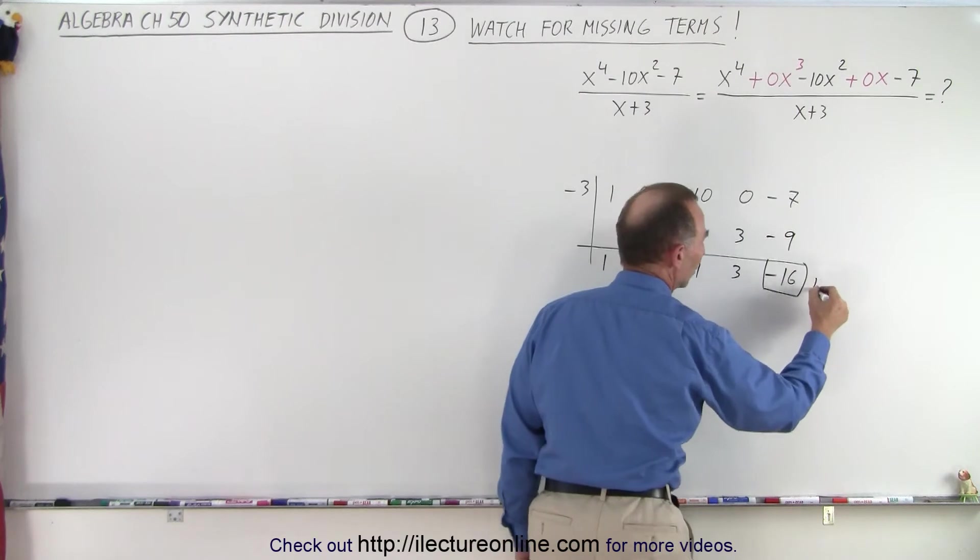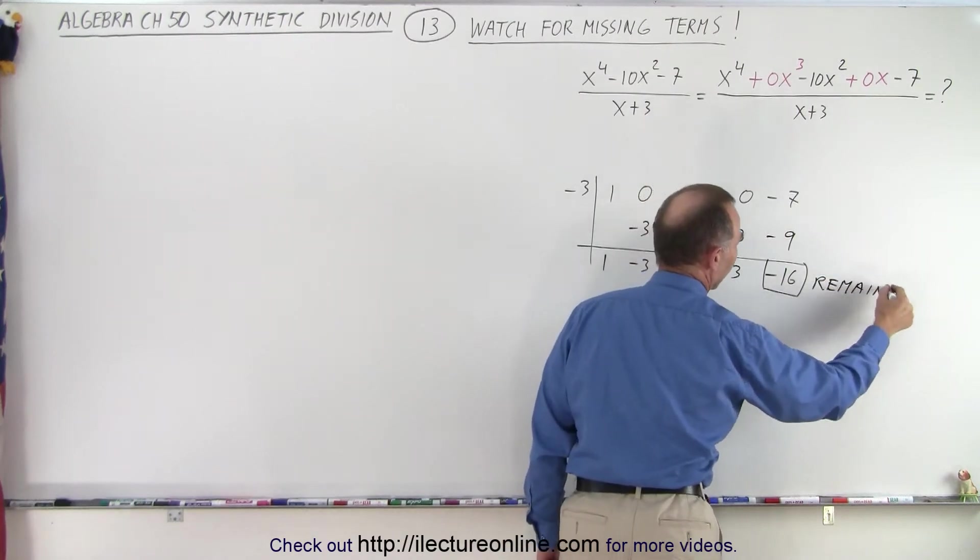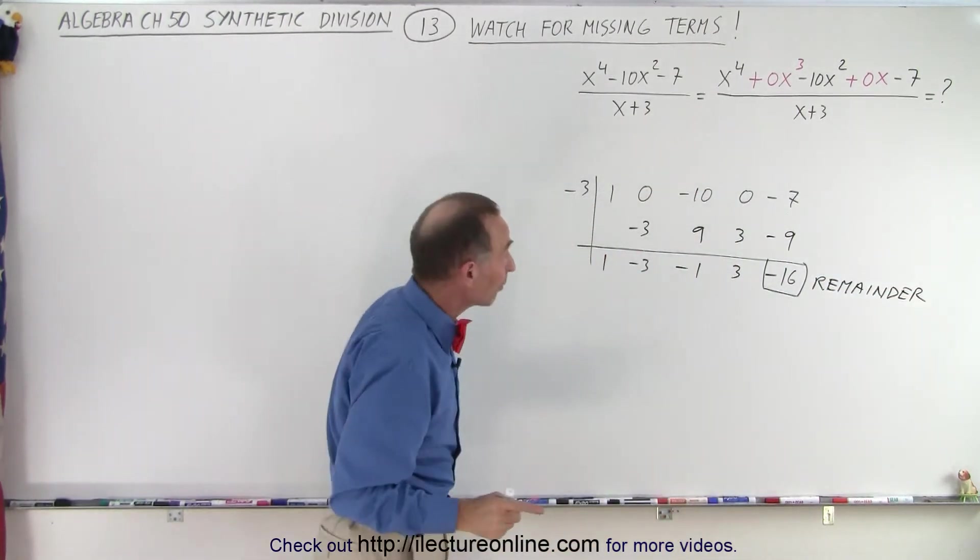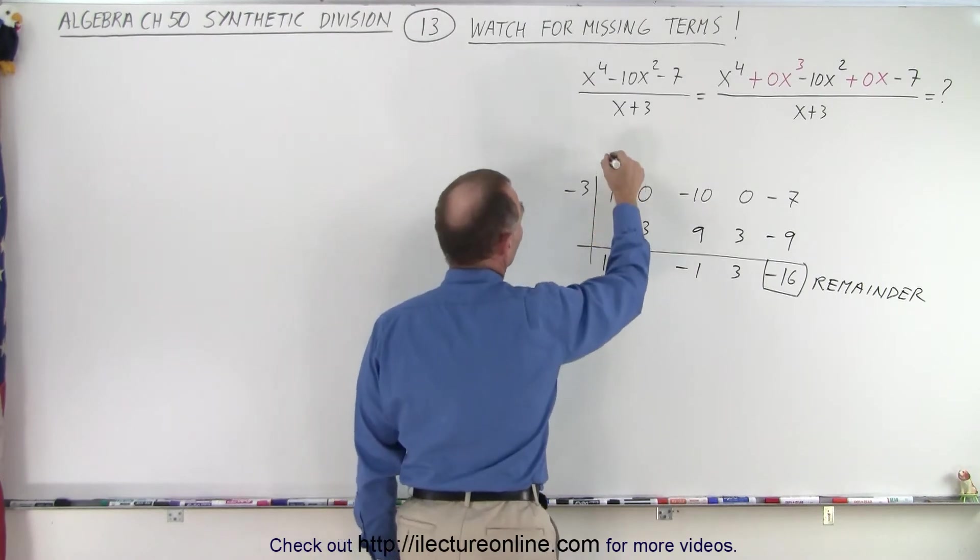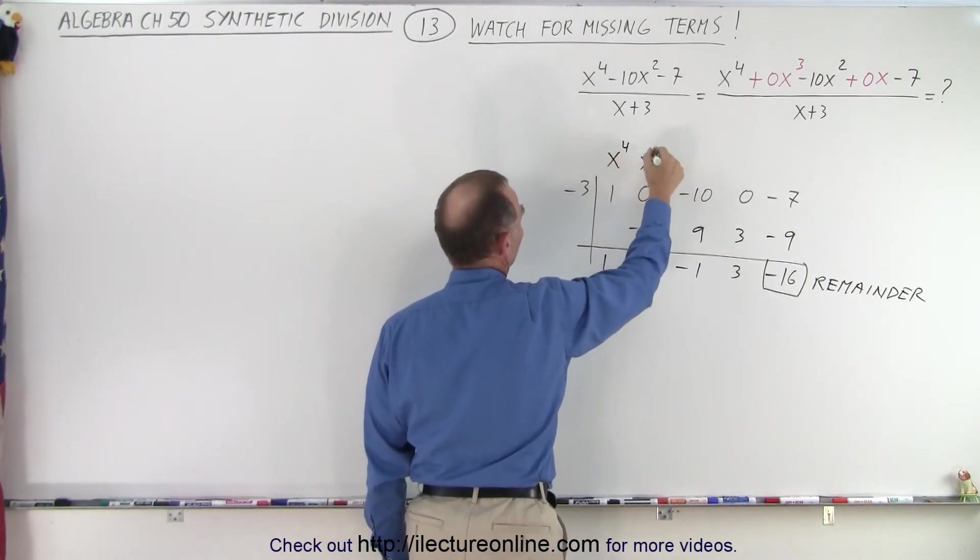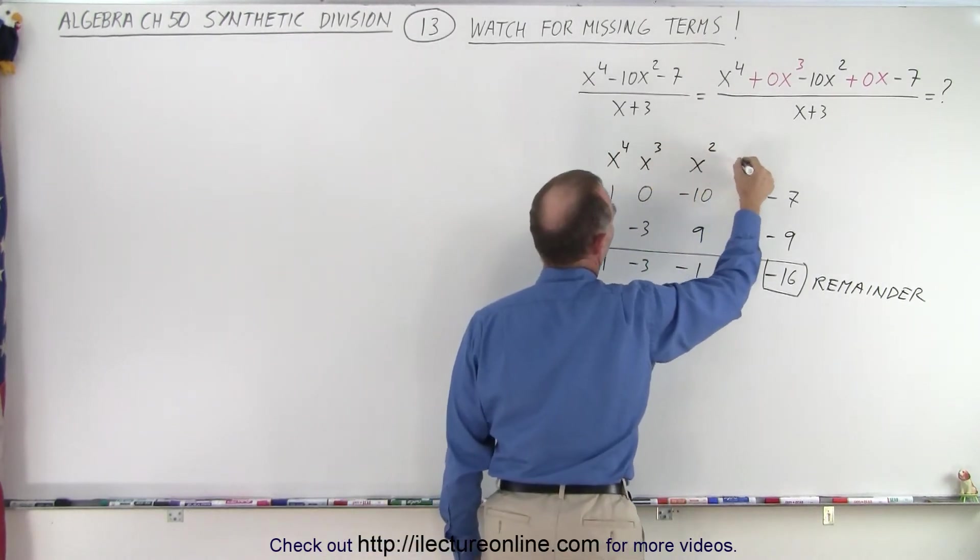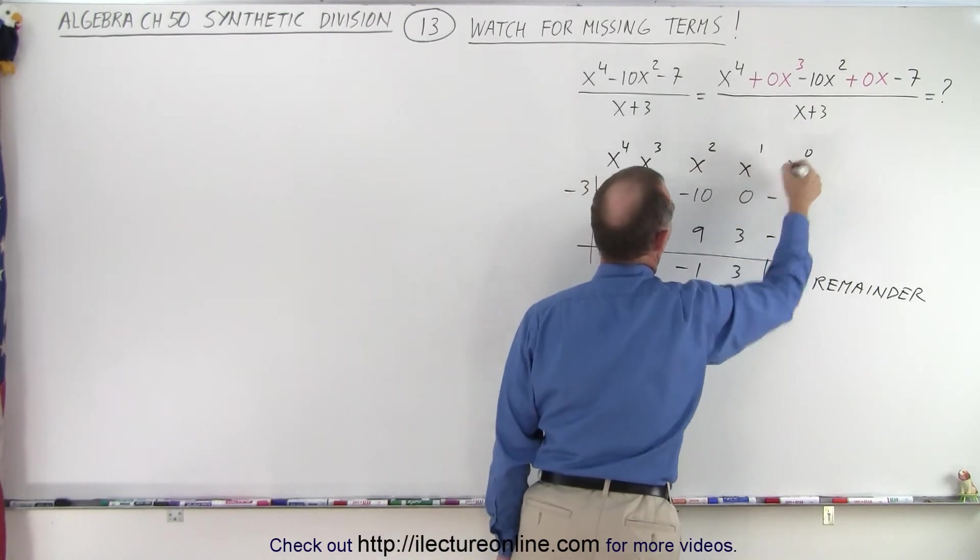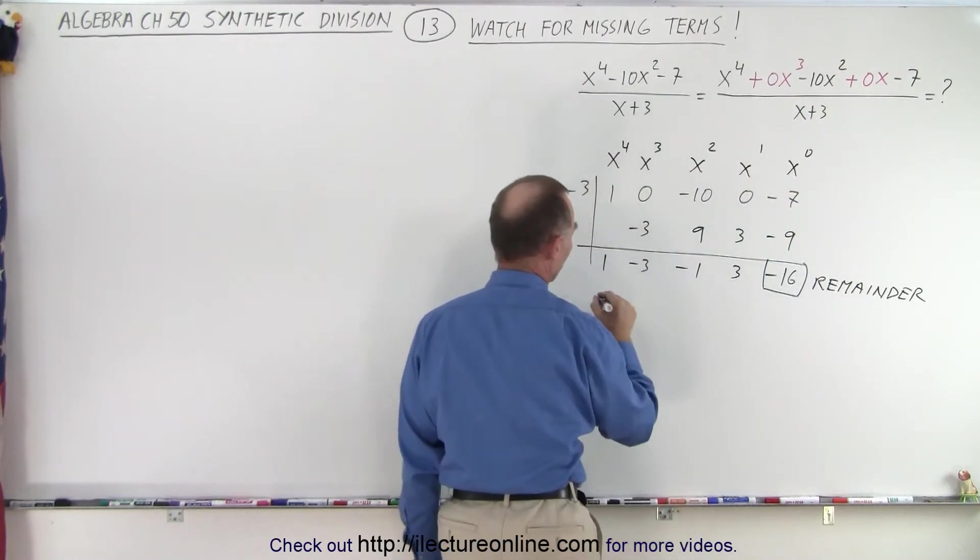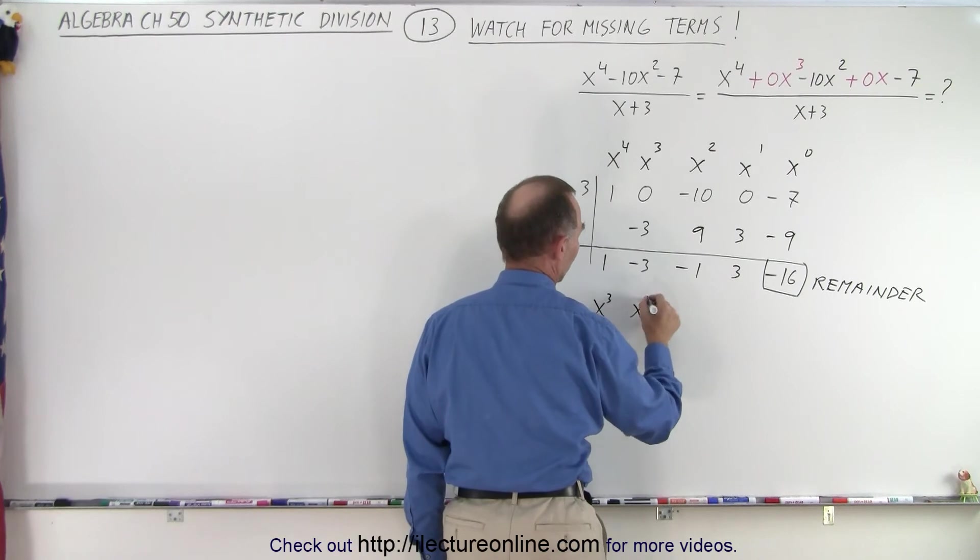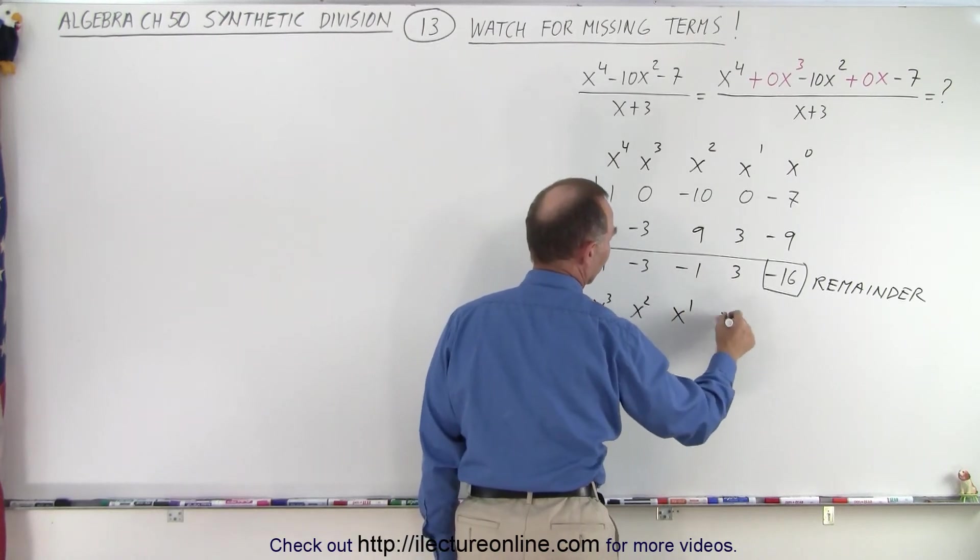Notice in this case, we do have a remainder. Since the original problem started with x to the fourth, right? This was the x to the fourth term, x cubed, x squared, x to the first power, x to the zero power. Then over here, the answer will be x cubed, x squared, x to the first power, x to the zero power.